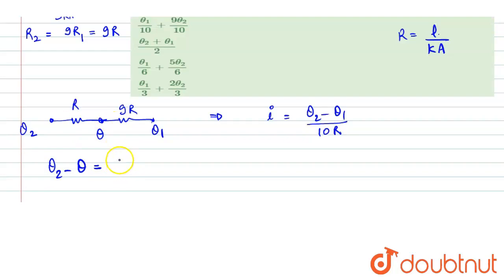That is current is theta2 minus theta1 upon 10R into R. This R and R will get cancelled out. So theta2 minus theta equals theta2 by 10 minus theta1 by 10.